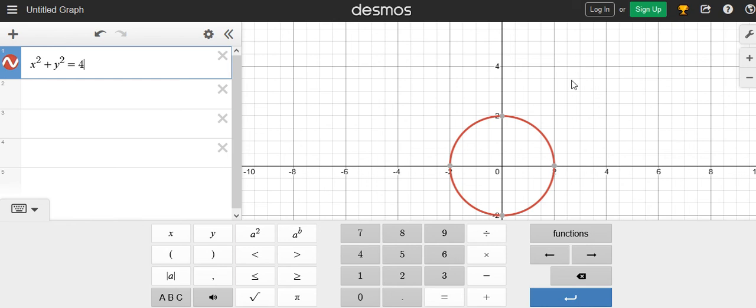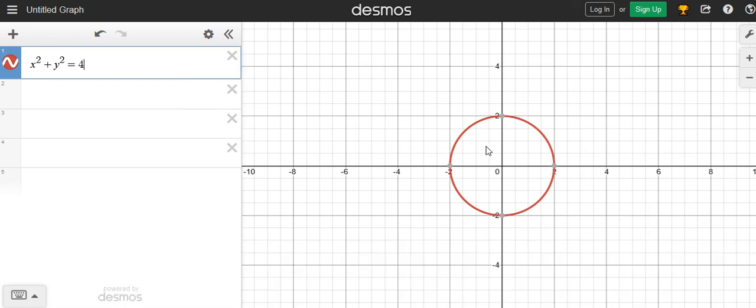As you can see, the circle appears instantly—you've got the red circle in seconds. This circle has its center at (0, 0).